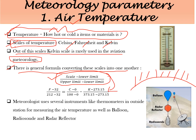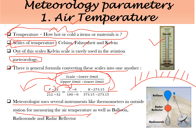For example, to convert Fahrenheit to Celsius, you use this formula because Fahrenheit has a higher limit of 212 and a lower limit of 32. The Celsius scale has a lower limit of 0 and a higher limit of 100. The Kelvin scale has a lower limit of 273.15 and a higher limit of 373.15. Meteorologists use several instruments like thermometers at outside stations to measure air temperature. They also use balloons, radiosondes, radar reflectors, and satellite-based analysis for calculating air temperature.